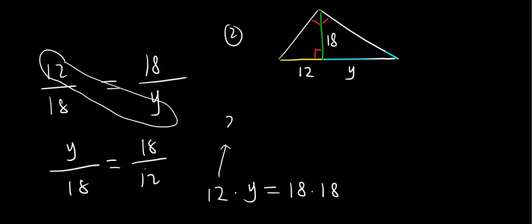So, 12, I'm going to rewrite 12 as 2 times 6 and then times y. 18, I have 3 times 6, that's the first 18. The next 18, I have 2 times 9. And I want to simplify.